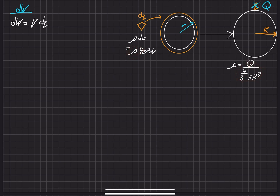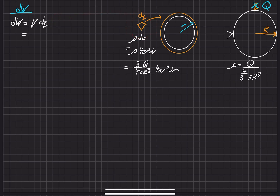We can go ahead and make that substitution. So dq becomes [Q / ((4/3)πR³)] times 4πr²dr. Substituting into our work expression, dW = V·dq, we get dW equal to V times (4/3)Q over πR³ times 4πr²dr. Now we need to evaluate what the electric potential V is.